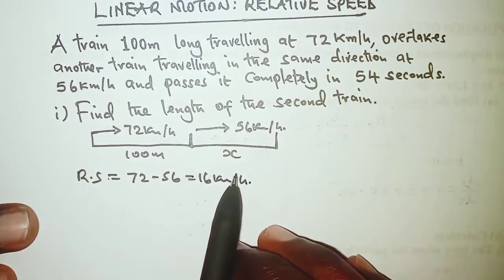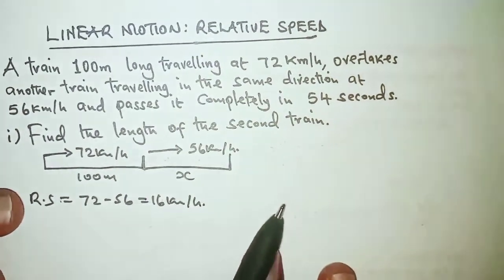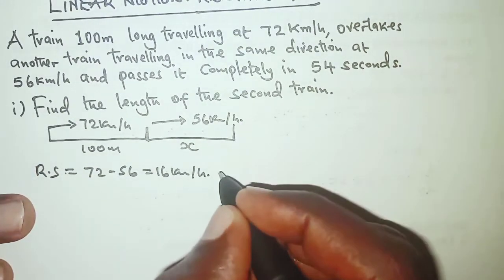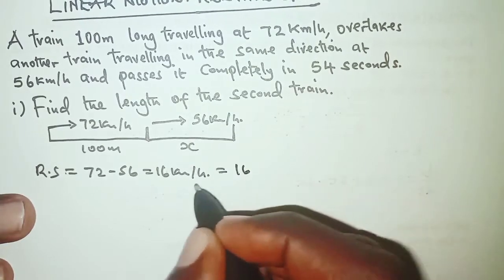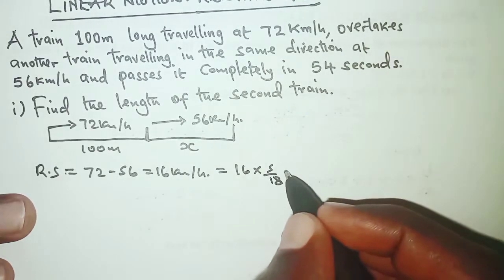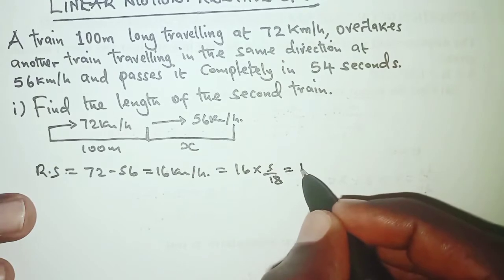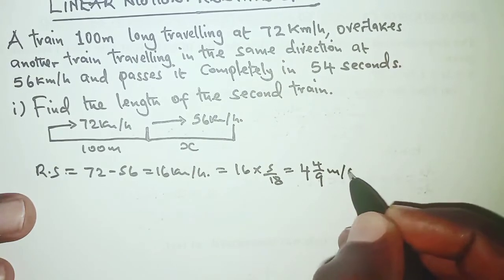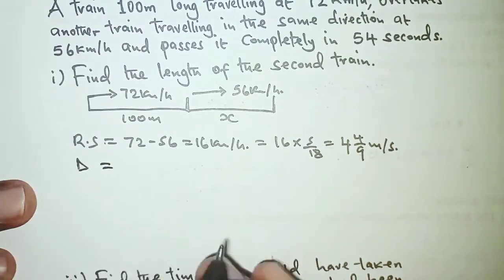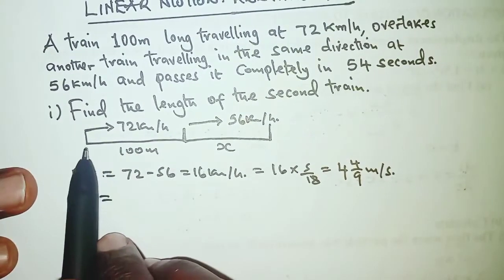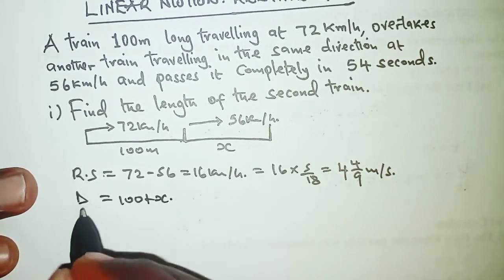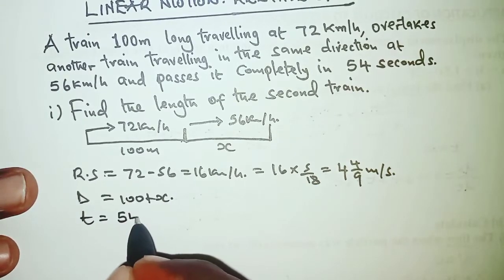We will have to express this in meters per second because the length is given in meters and time is given in seconds. This is obtained by multiplying 16 kilometers per hour by 5 over 18, which converts it into meters per second, giving us 40 over 9 meters per second. We also need the distance covered during the overtaking, which is the sum of the lengths of the two trains: 100 plus x. The time is 54 seconds.